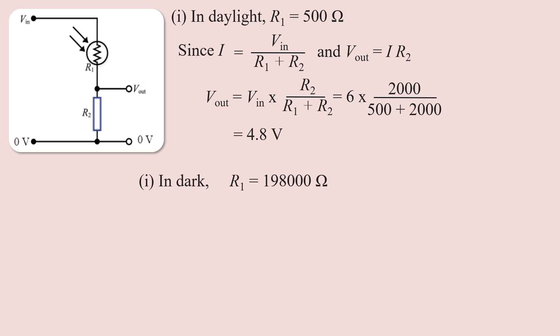In the dark, the photoresistor R1 becomes very large — 198,000 ohms — as it acts like a poor conductor in a dark system.